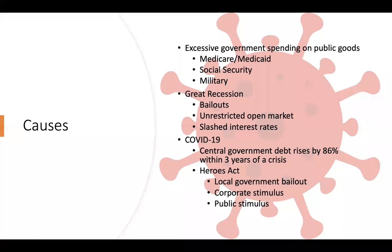Recently, a big cause of government debt is COVID-19. A lot of governments had to spend money to bail out and provide stimulus. The paper cited that within three years of a crisis, central government debt typically rises by about 86%. We can see that clearly in the United States — since January, our debt has gone up about 30%, which is right on track with the prediction mentioned in the article.